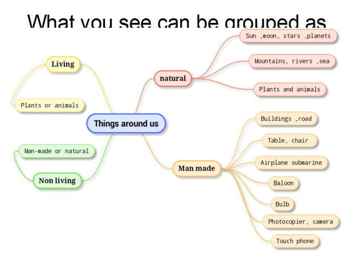Among the man-made things, you can see buildings and the road. You can see tables and chairs in the classroom. You can see an airplane and submarine which are huge and do everything like living things. You can see a balloon that grows in shape when you blow. You can see a bulb that gives light like the sun or the moon. You can see a photocopier or a camera that gives you an exact replica of what you already have. And you can see a touch phone which when you touch gives you a response.